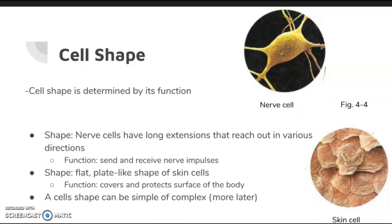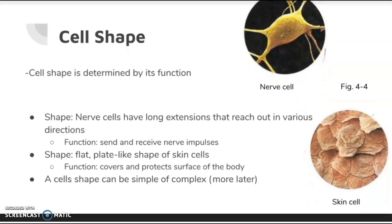Cell shape is determined by the function of the cell. For instance, nerve cells have long extensions because the function of nerve cells is to transmit signals throughout your body to tell other parts what to do or to send messages. Skin cells have more of a flat, plate-like shape because their function is to cover and protect the body. The form of the cell — simple or complex — follows its function.